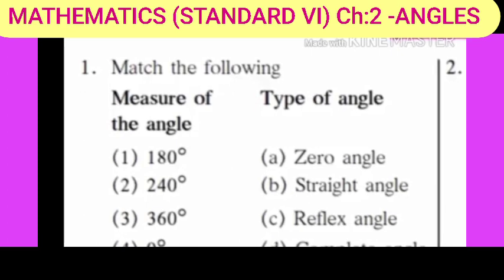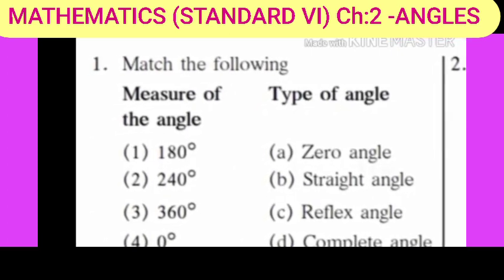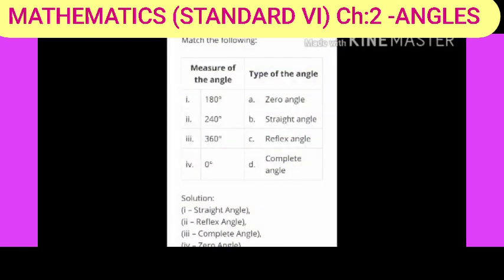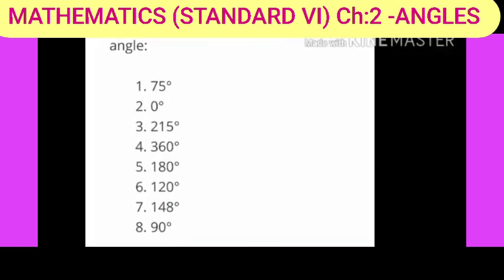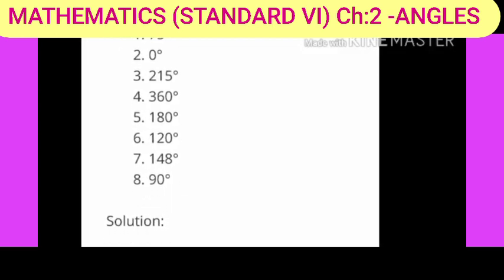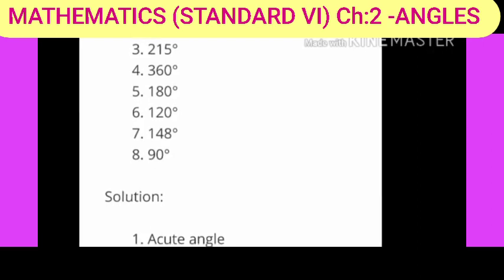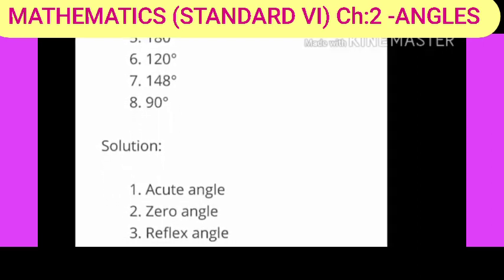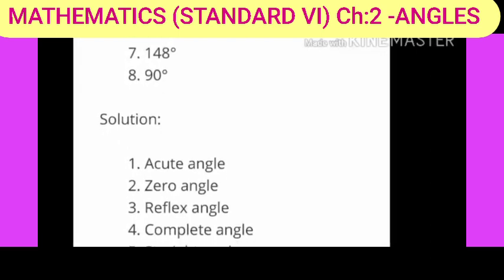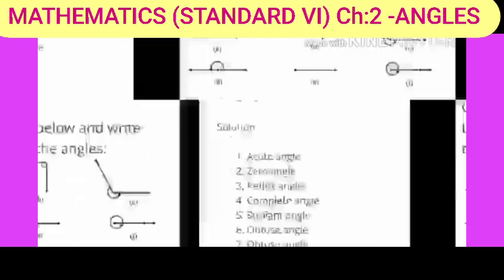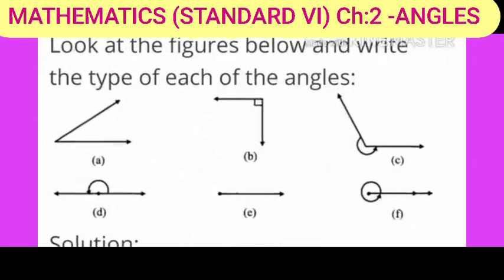240 degrees, next is 240 degrees. The correct answer is reflex angle. Next is 360 degrees. 360 degrees, all of you know it. Yes, right, it is a complete angle. And zero degrees, zero angle. See the solution, students. Students, start writing in your notebook. These are the answers.